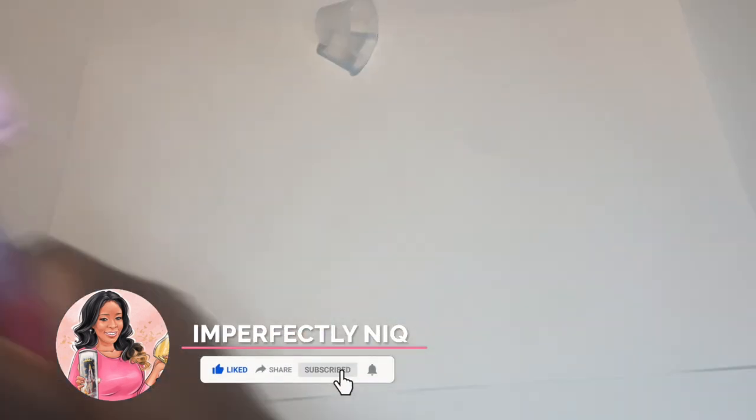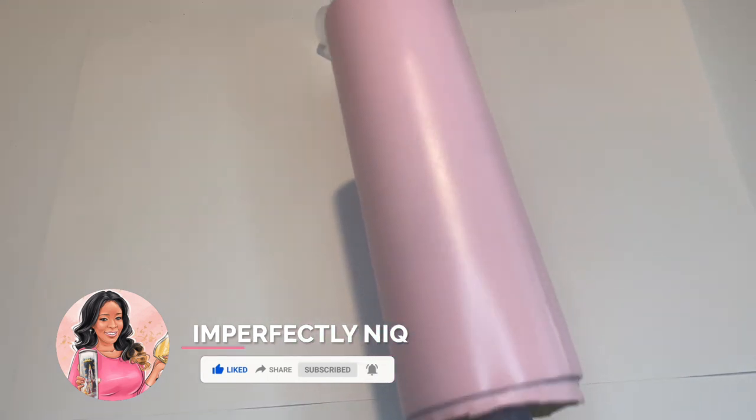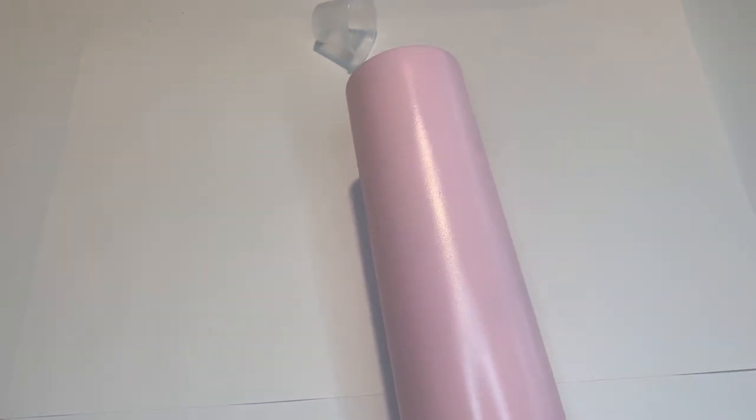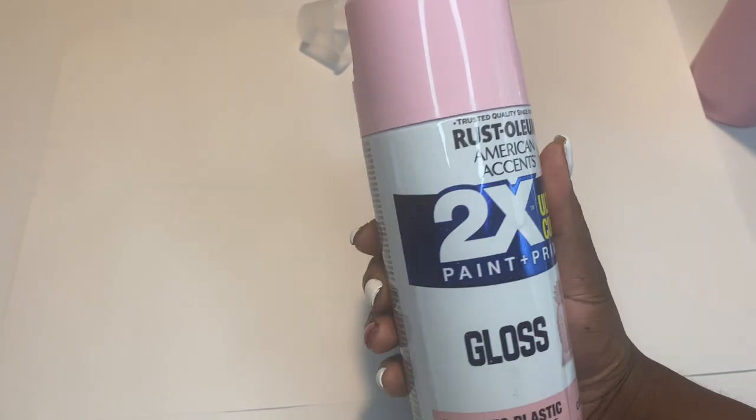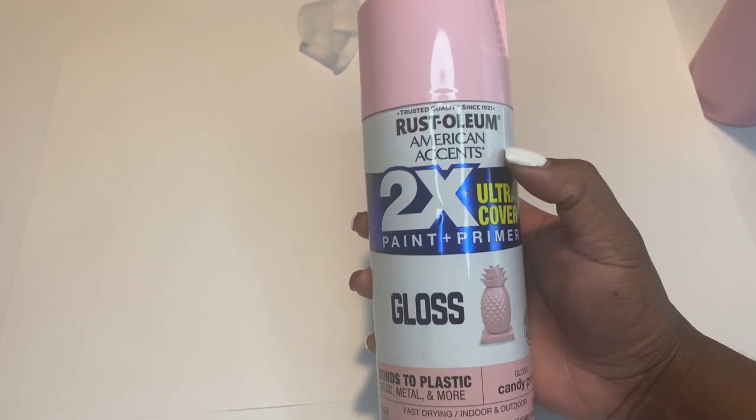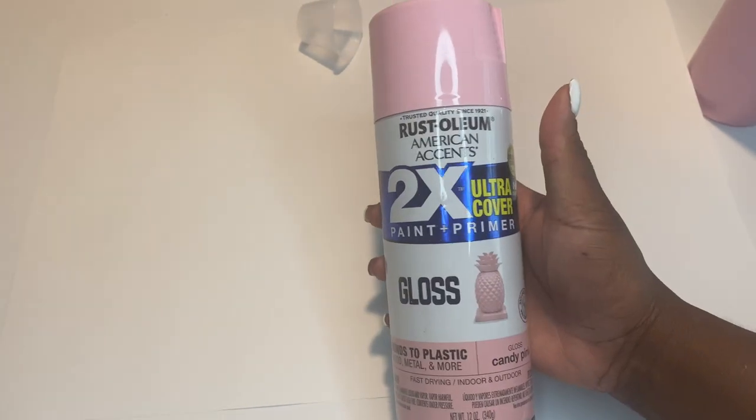We are going to start with this tumbler here. This was spray painted candy pink and it was prepped and spray painted using my favorite prepping and spray painting method. If you have not seen that video already look in the link above or in the description box. This was spray painted with Rust-Oleum candy pink spray paint, gloss two times. This is my favorite spray painting brand.